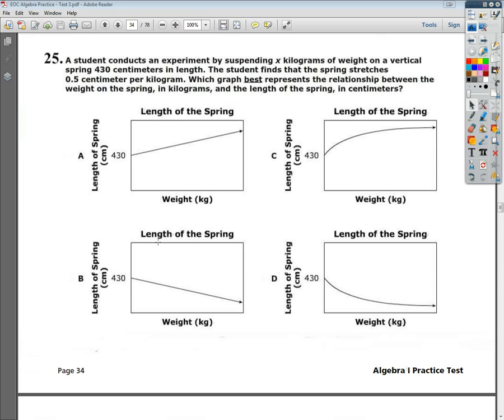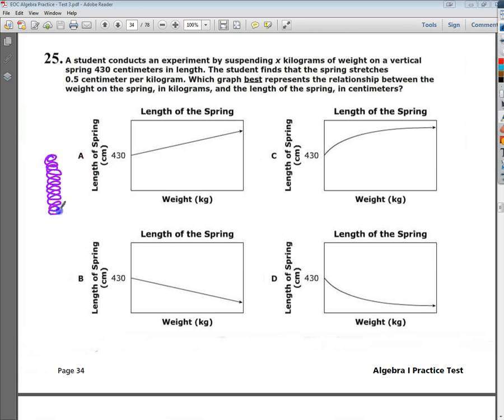The question says a student conducts an experiment by suspending x kilograms of weight on a vertical spring. So basically, I've got this spring, the worst spring drawn ever, and then I've got this weight on it.